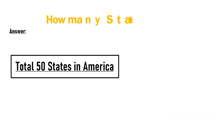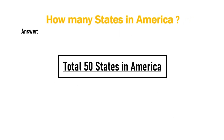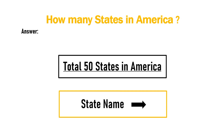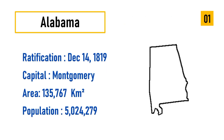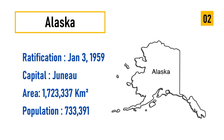How many states in USA? Answer: total 50 states in USA. State name and details. Number one: Alabama, ratification December 14, 1819, capital Montgomery, area 135,767 square kilometers, population 5,024,279. Number two: Alaska, ratification January 3, 1959, capital Juneau, area 1,723,337 square kilometers.